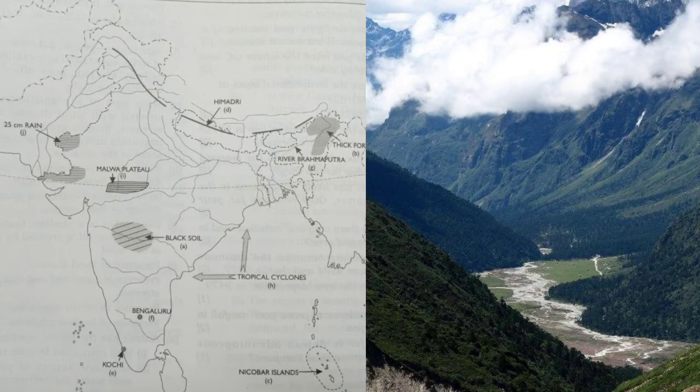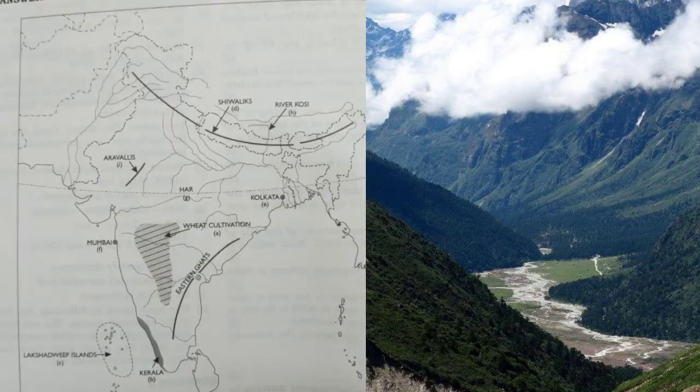Mark the Malwa Plateau and an area with less than 25 centimetres of annual rainfall — 'J' represents the area of below 25 cm rainfall.